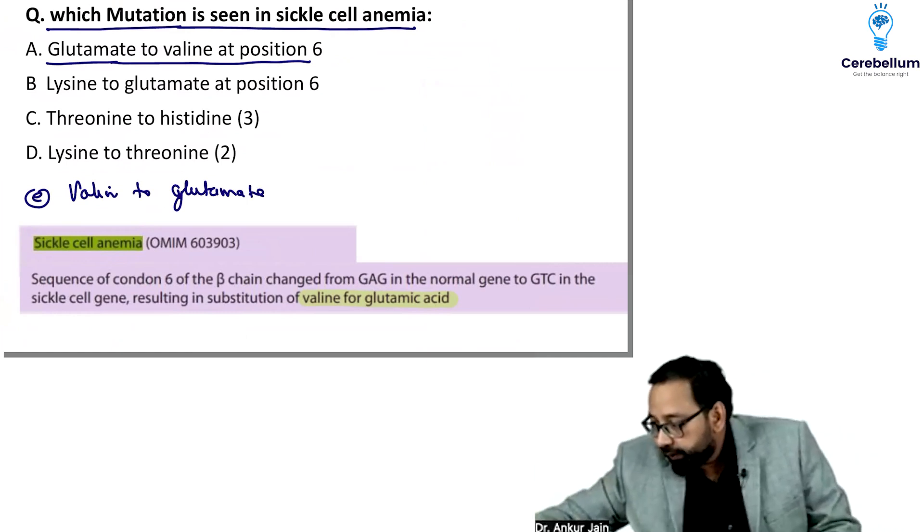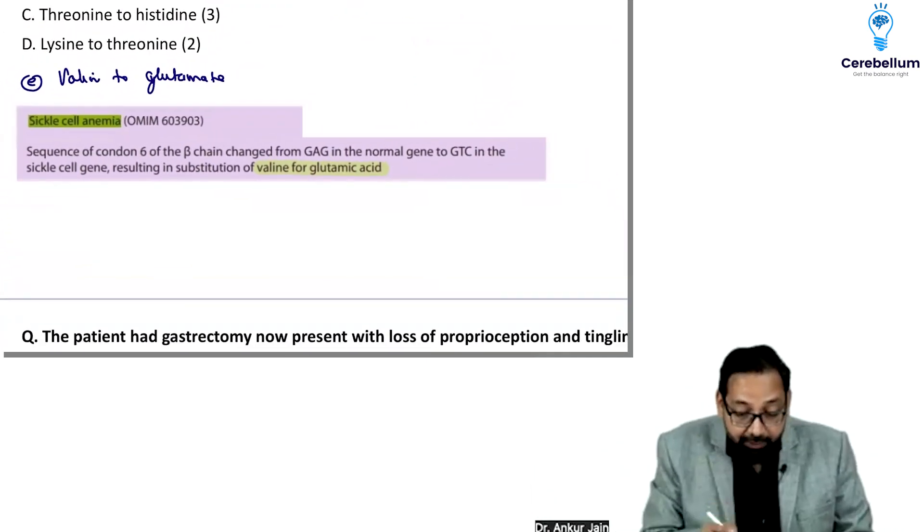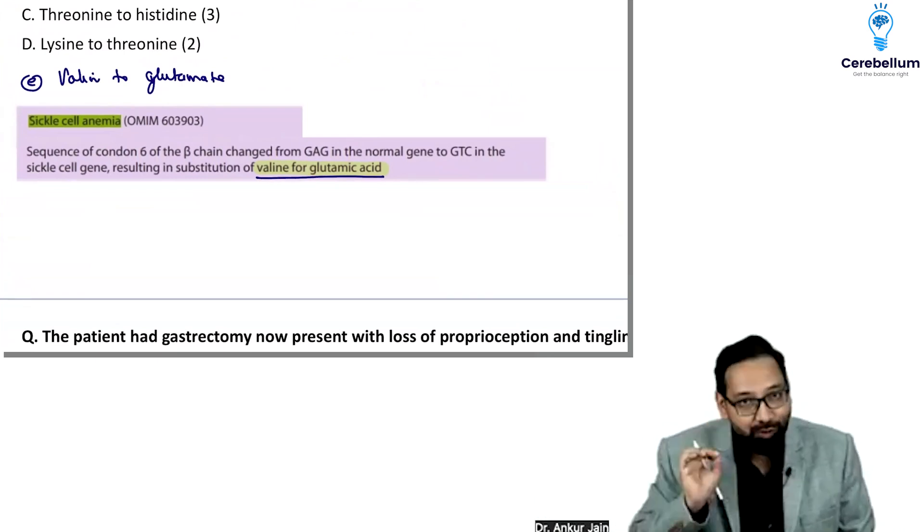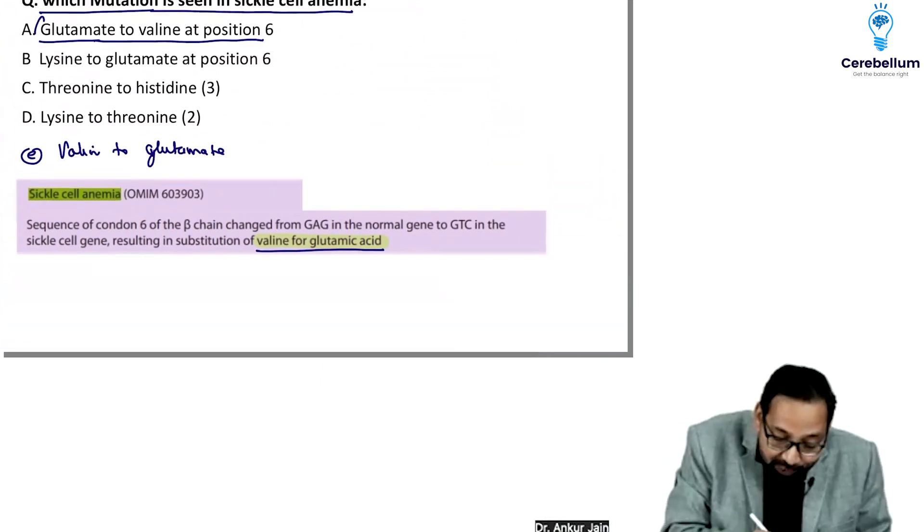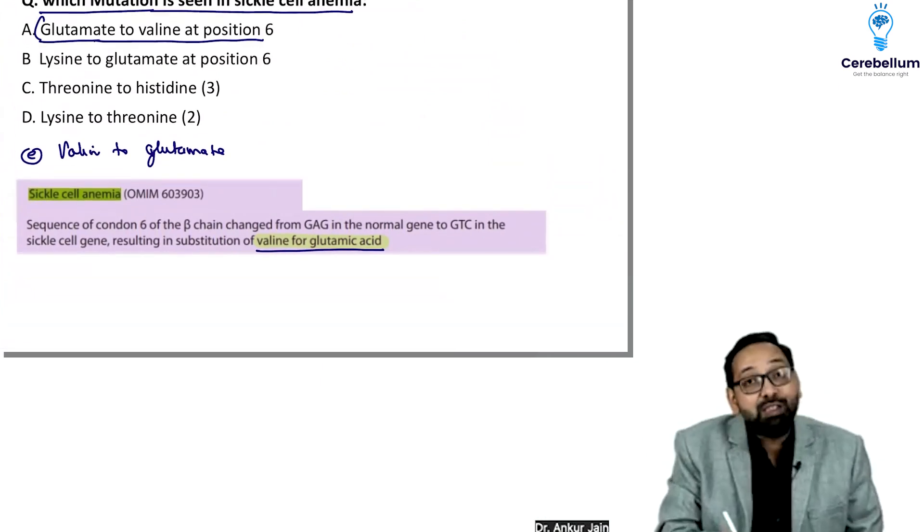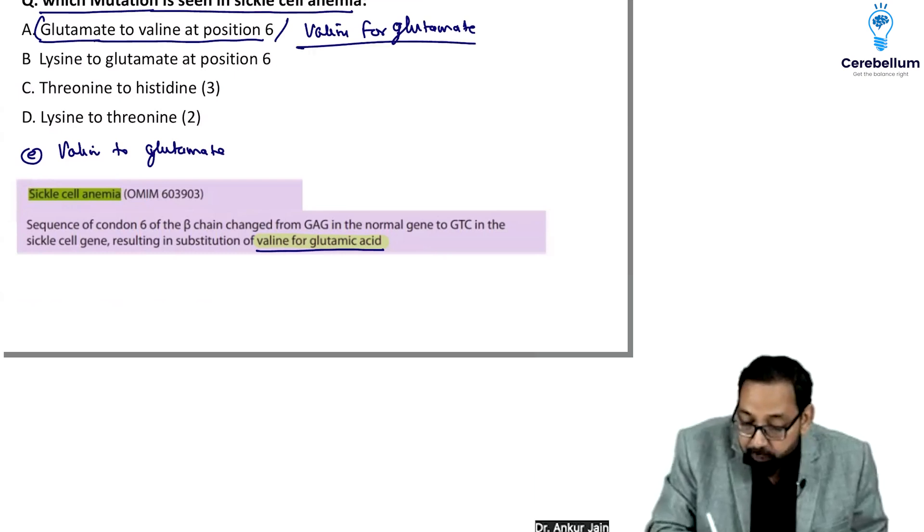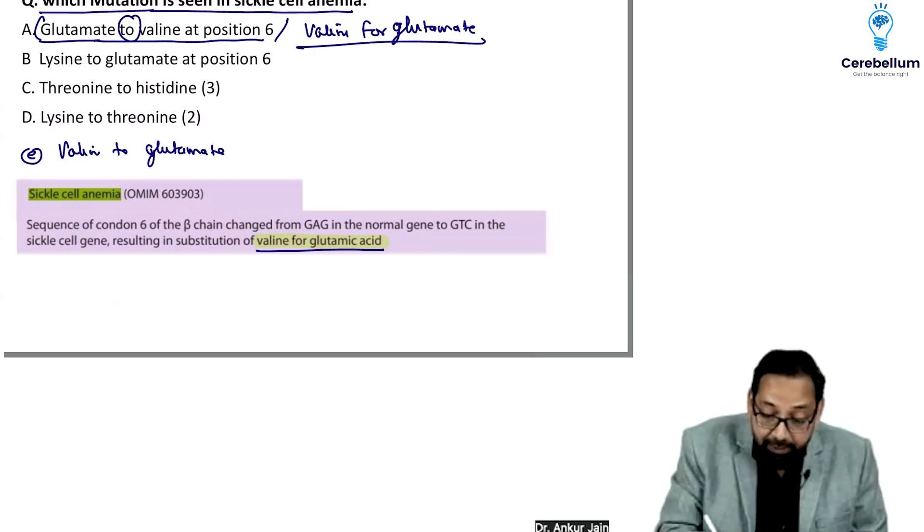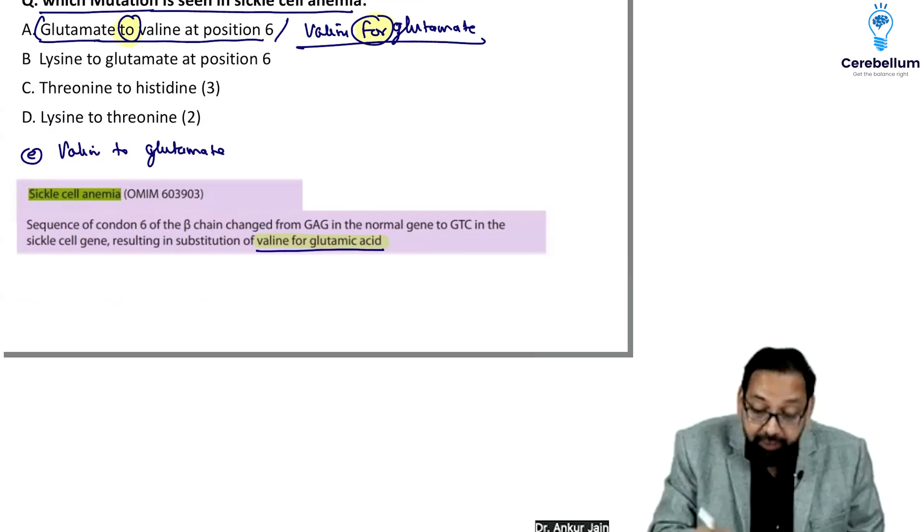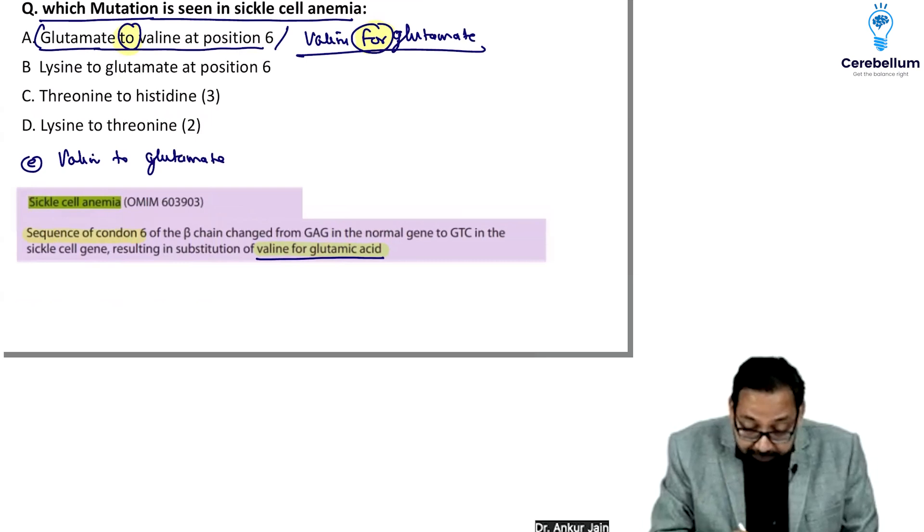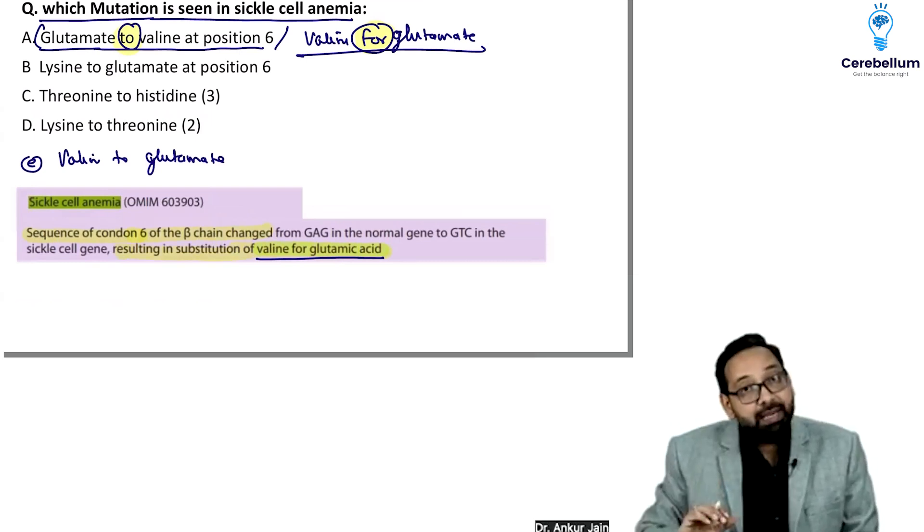I took this line from Harper deliberately because when attempting questions, many times we ignore options two and four. In place of glutamate to valine at position six of beta globin chain, they can give valine for glutamate. Read questions carefully. The sequence at codon six of beta changed, resulting in substitution of valine for glutamic acid.